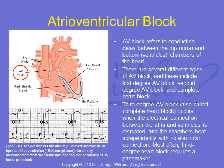The EKG shown depicts the atrium, or P waves, beating at 80 beats per minute, and the ventricles, the QRS complexes, electrically disconnected from the atrium and beating independently at 35 beats per minute. This patient successfully underwent a pacemaker implantation.